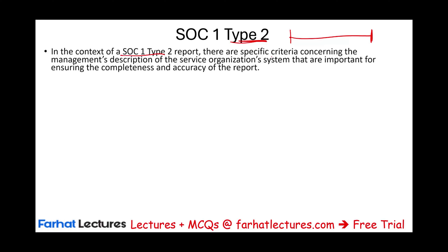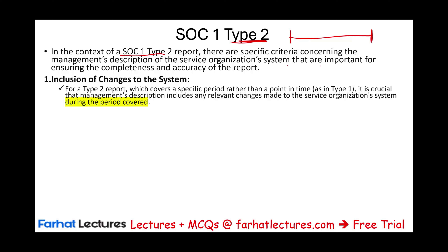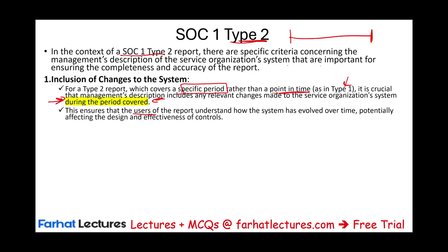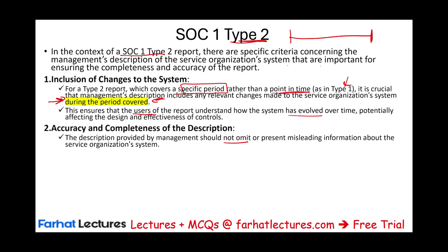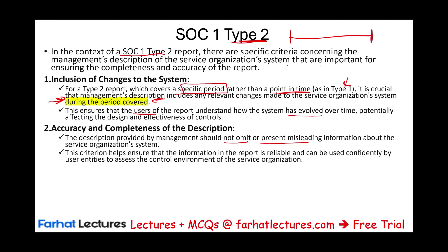In the context of a SOC 1 type 2 report, specific criteria concerning the management description are important for ensuring completeness and accuracy. One criterion is inclusion of changes to the system — since type 2 covers a specific period rather than a point in time, management's description must include any relevant changes made to the service organization throughout the period covered. This ensures users understand how the system has evolved and how changes may have affected control design and effectiveness.